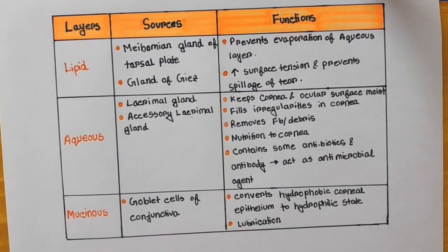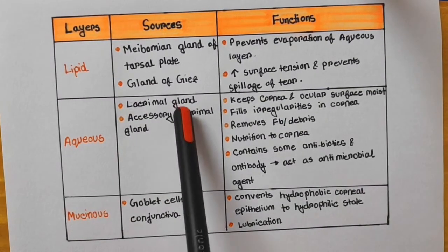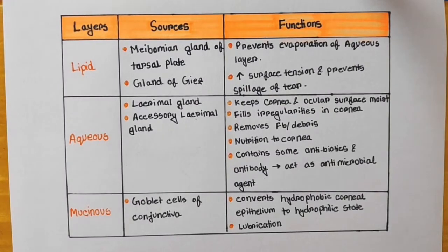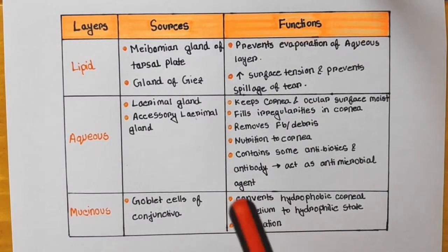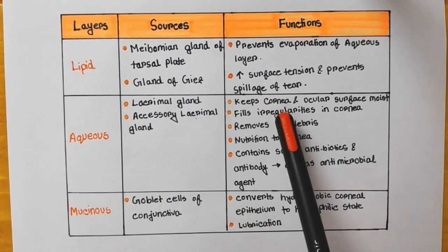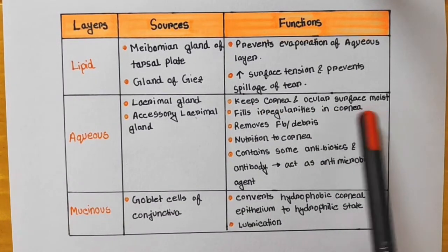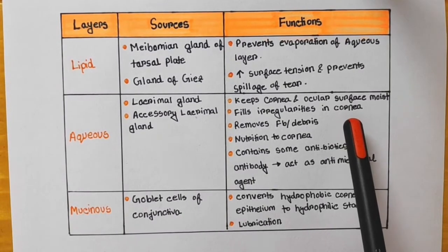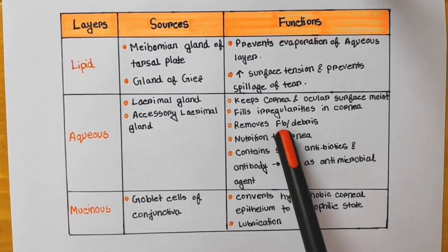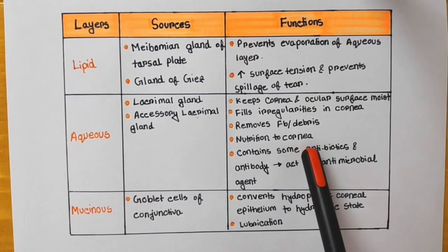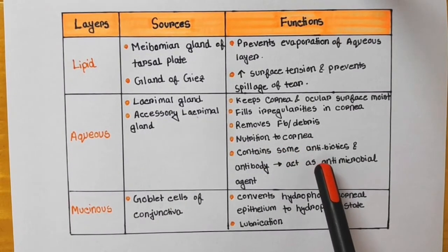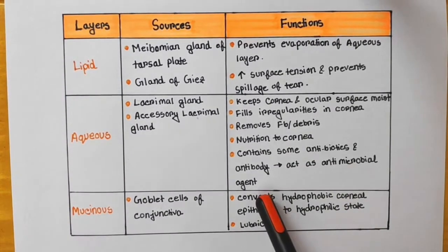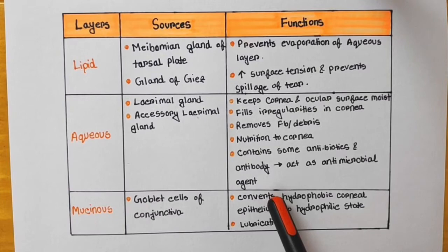Now the aqueous layer. The sources are the lacrimal gland and accessory lacrimal gland — from the lacrimal gland the formation of tears occurs. The functions are: it keeps the cornea and ocular surface moist, fills irregularities in the cornea if any are present, removes foreign bodies or debris, gives nutrition to the cornea, and it contains antibiotics and antibodies which act as antimicrobial agents, protecting our eyes from bacteria.